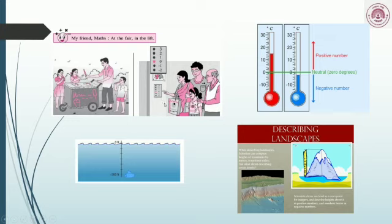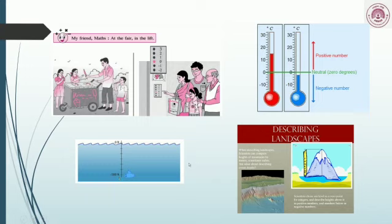We also use positive and negative numbers to describe places. The height of a mountain is expressed as a positive number because it is above the ground. When things are below the surface of the sea, we use a negative number. For example, a submarine at −500 feet is 500 feet below the surface of the sea.